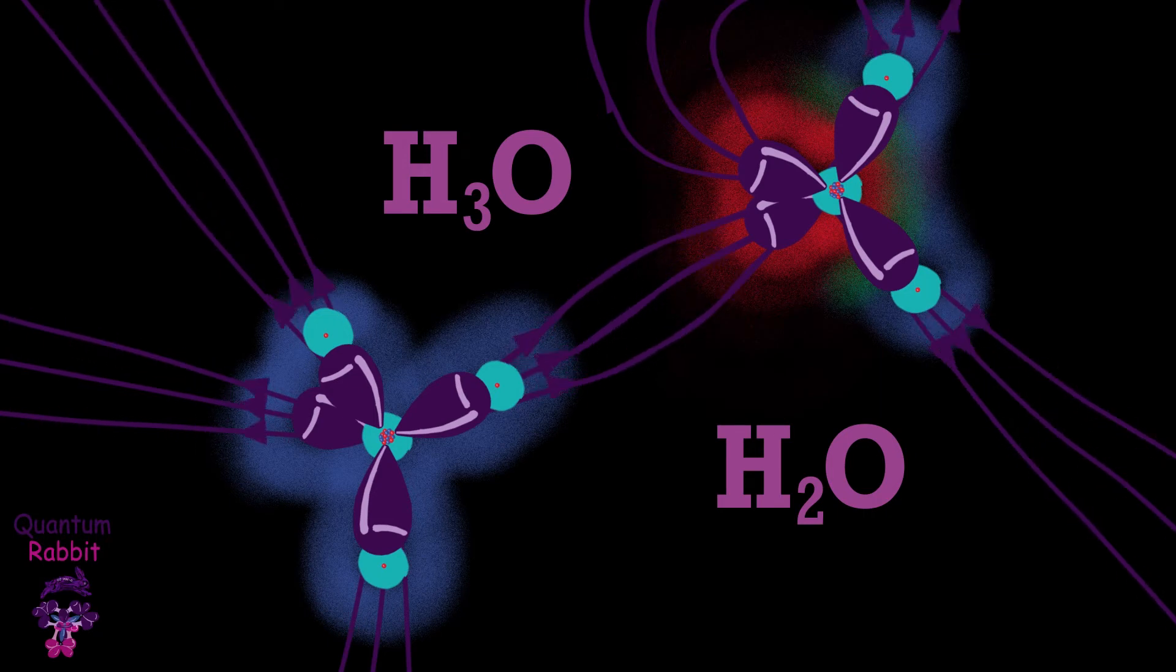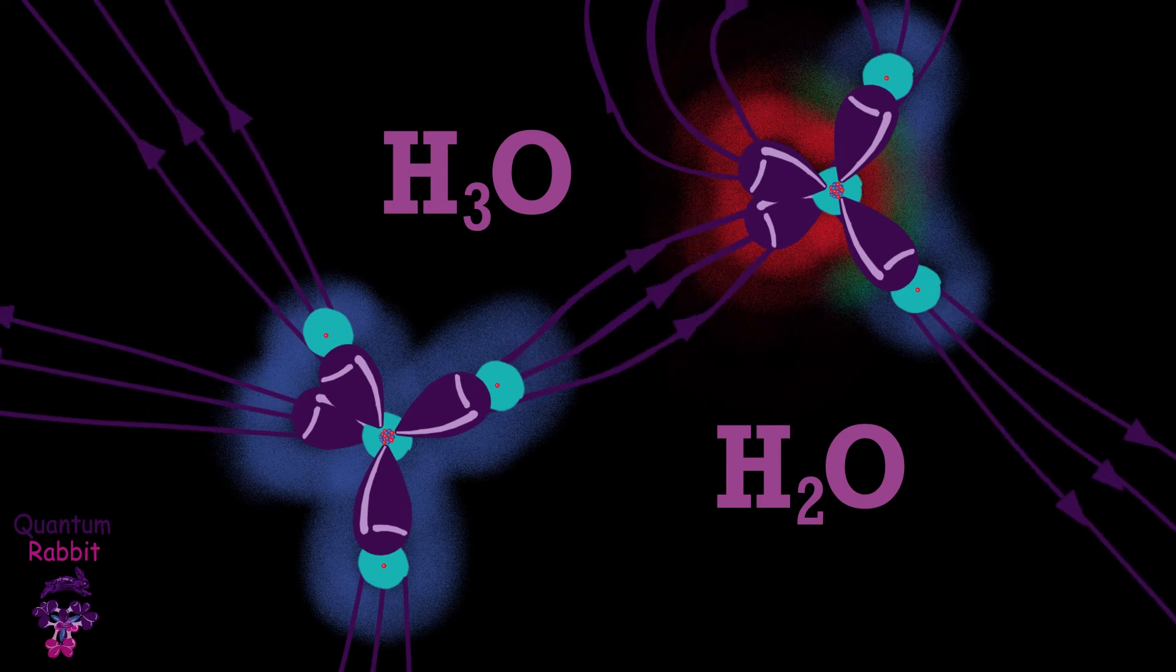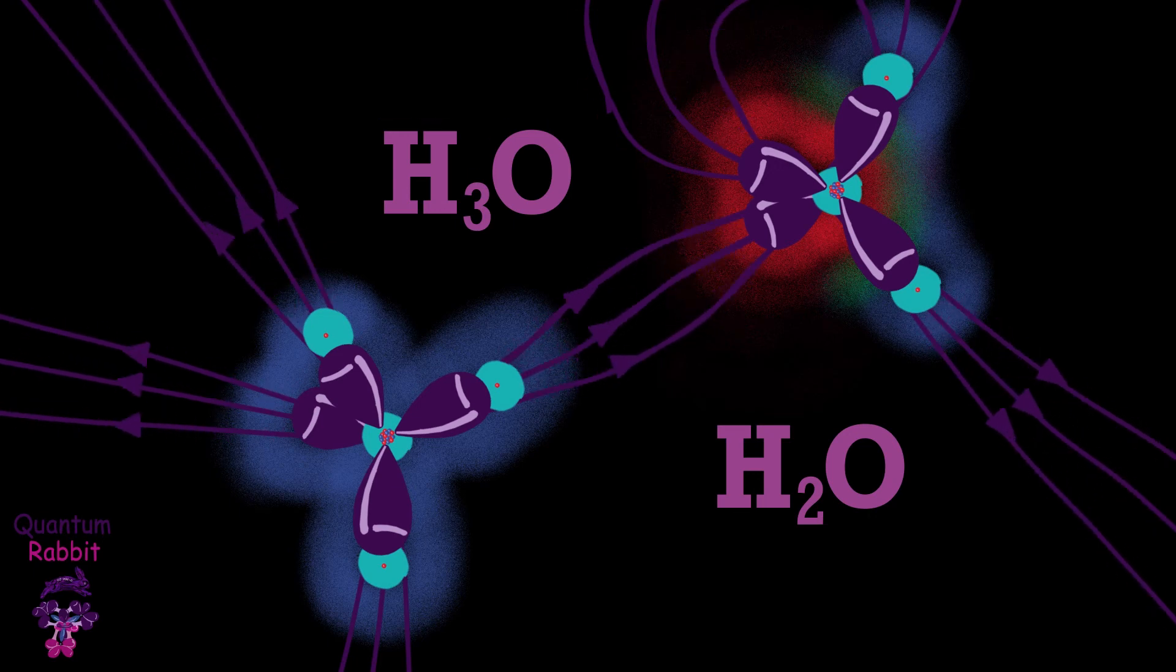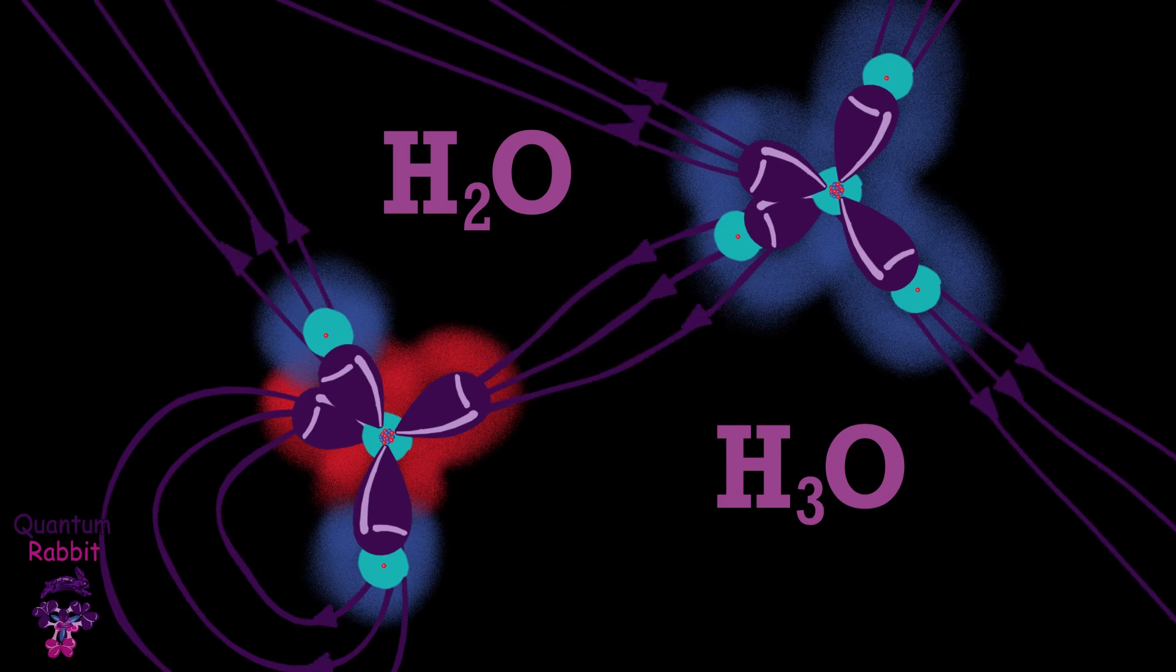The proton changes the electric charge in the entire molecule to positive and becomes very unstable, so it gets rid of one of its protons by donating it to another complete orbital that is close enough. As it is connected in an ideal way by hydrogen bonds, the movement of protons is almost instantaneous between the molecules. Now the other water molecule becomes a hydronium and also has to donate a proton to another water molecule, and so on.